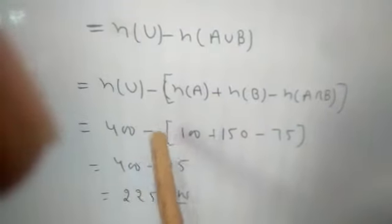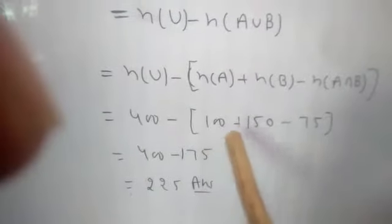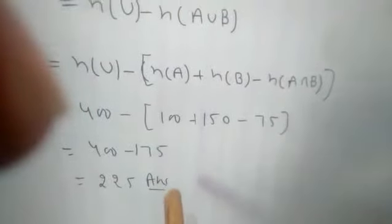Now, substituting the given values: n(U) is 400, n(A) is equal to 100, n(B) is 150, n(A intersection B) is 75. Solving this we find answer 225.